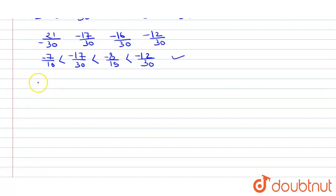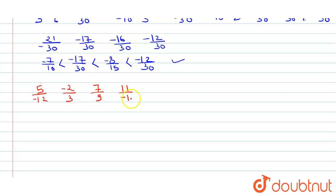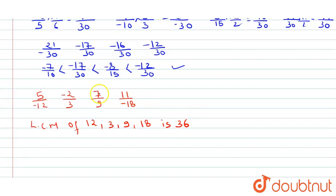The third question gives us: 5/(-12), -2/3, -7/9, and 11/(-18). We take the LCM of 12, 3, 9, and 18, which is 36. We need to arrange these numbers in ascending order.